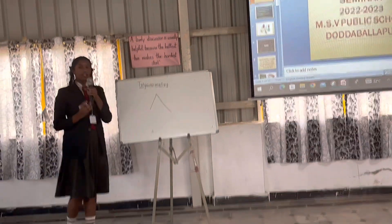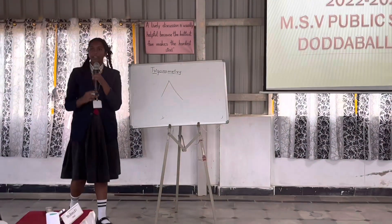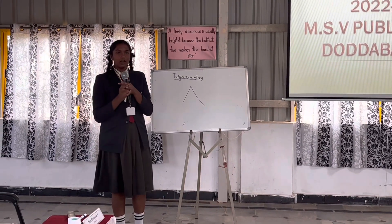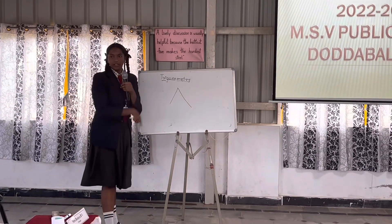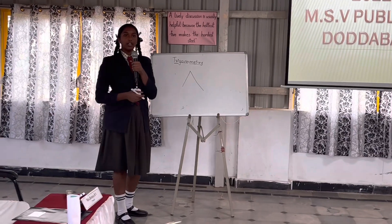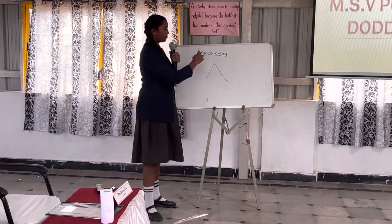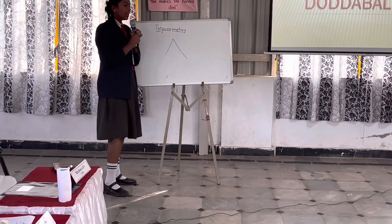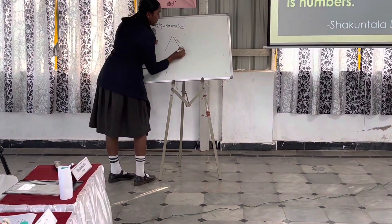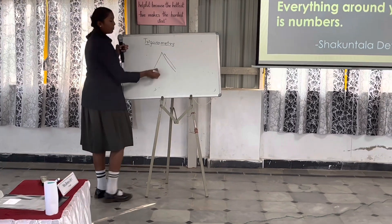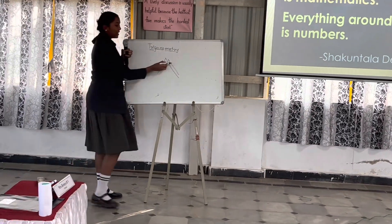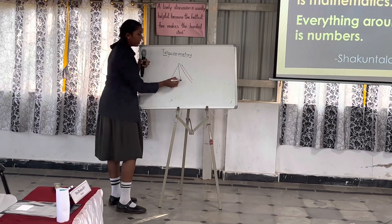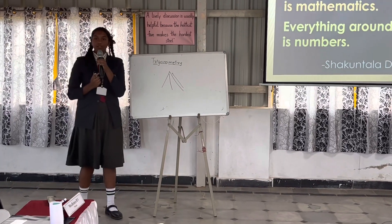Think of a mountain — you want to calculate its height. How do you calculate it? You might say we can measure it directly, or use technology. But if you measure from the outside, you are measuring the land height, not the mountain's height. To find the actual height of the mountain, this is where we use trigonometry.